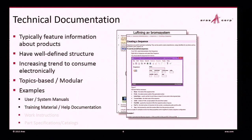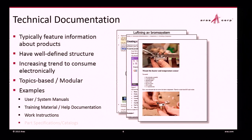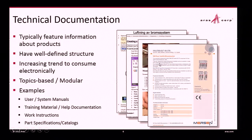Training material and help for software — same type of thing: you've got text, tables, lists, and graphics, including snapshots of your user interface. Work instructions with various diagrams and pictures illustrating a manufacturing process step — again tables, lists, and so on. And finally, marketing documents with information about a specific part or family of parts that have a fairly consistent structure.